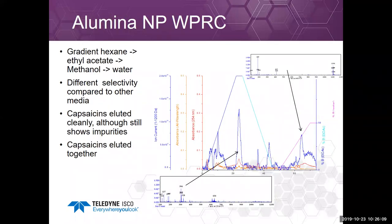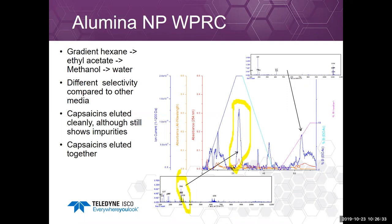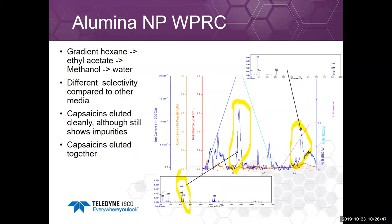I then ran alumina normal phase using a gradient of hexane to ethyl acetate to methanol to water. It has a different selectivity compared to diol or silica. What I find is that the catechins eluted cleanly — I can see the mass spectra for them, though they are all mixed together. I can still see other compounds eluting later, but the alumina gives a nice clean batch of capsaicins as a class — they eluted very nicely.